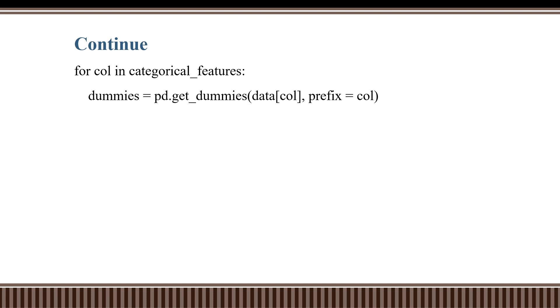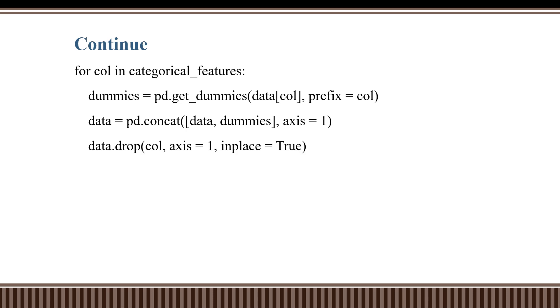In the next step, we use a for loop to iterate over each categorical feature. We create a dummy variable using one-hot encoding, which is necessary because when we deal with categorical variables, we must perform one-hot encoding and dummification. We then concatenate the dummy variable with the original dataset and drop the original categorical feature, since after performing one-hot encoding it is no longer needed. We then print the head to verify.